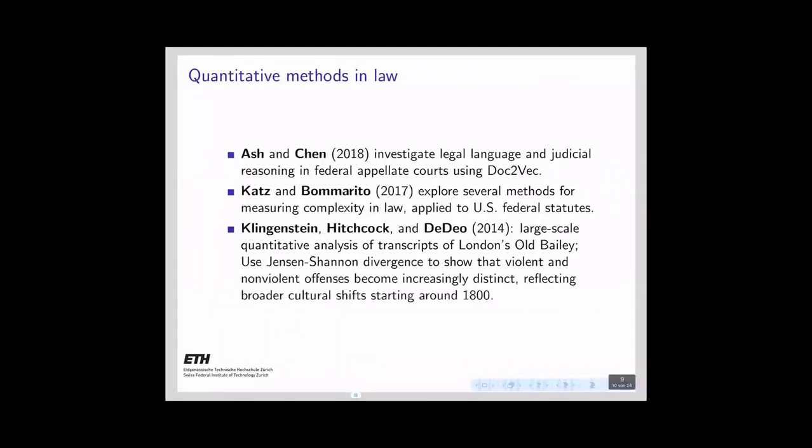Related quantitative work in law includes Ash and Chen, who investigated legal language and judicial reasoning in federal appellate courts using Doc2Vec. Katz and Bommarito explored several methods for measuring complexity in law applied to U.S. federal statutes. Klingenstein, Hitchcock, and Tedeo performed a large-scale quantitative analysis of transcripts of London's Old Bailey using the Jensen-Shannon divergence, showing that violent and nonviolent offenses became increasingly distinct, reflecting a broad cultural shift starting around 1800.